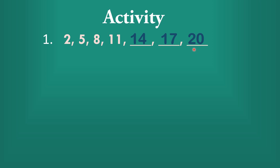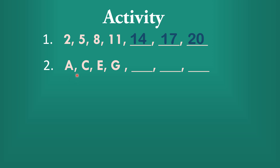How about number 2? The given sequence is A, C, E, and G. So A — B is not written — C. D is not written — E. F is not written — G. So that could be the pattern: every other letter is skipped.